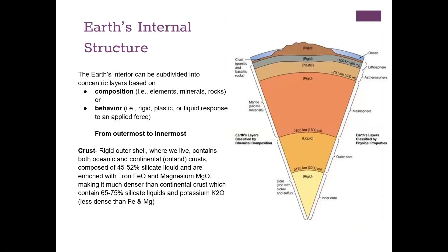To get started, we'll go over Earth's internal structure. The Earth's internal structure can be subdivided into two parts: its composition and its behavior. Composition refers to the elements, minerals, and rocks that build each layer. Behavior refers to whether it is rigid or plastic — does it move when you apply force? We'll go through the concentric layers from outermost to innermost.